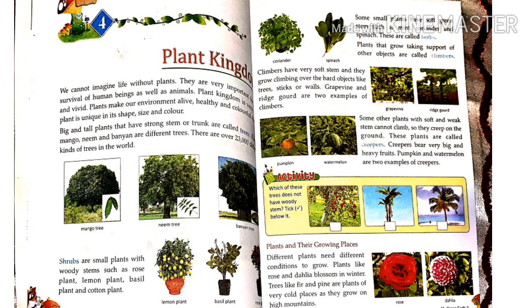Some other plants with soft and weak stems cannot climb, so they creep on the ground. These plants are called creepers. Creepers bear very big and heavy fruits.